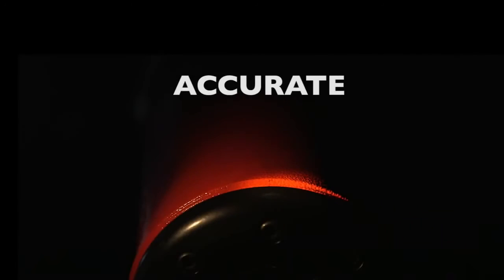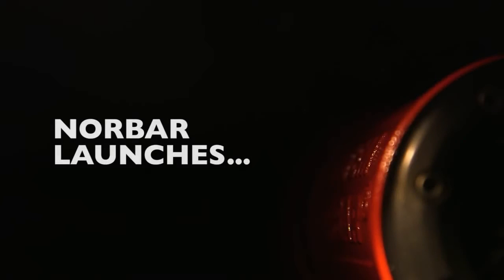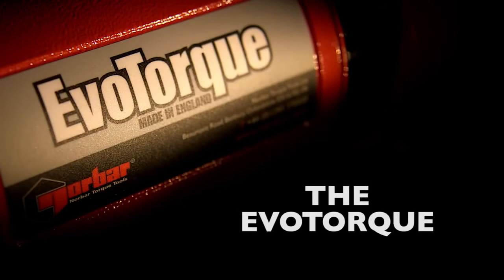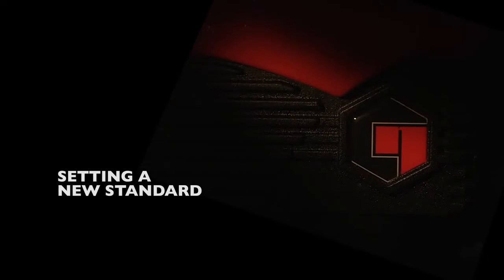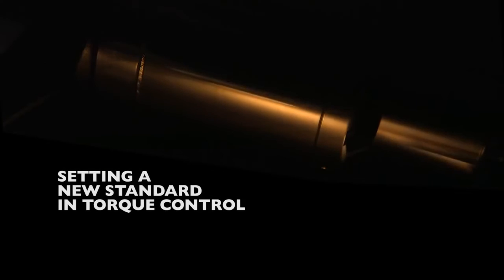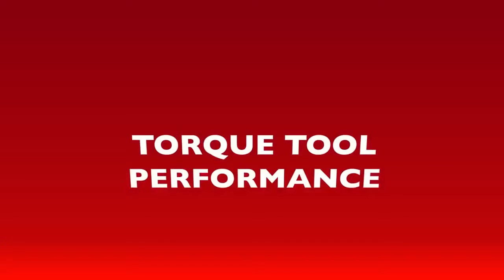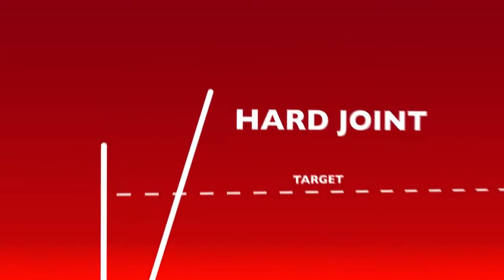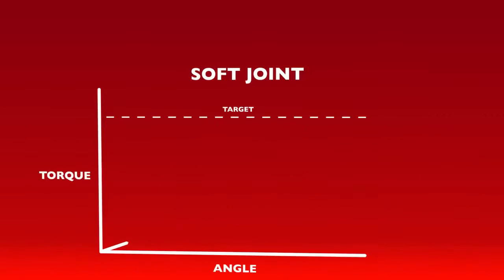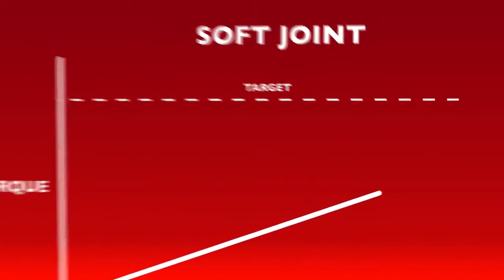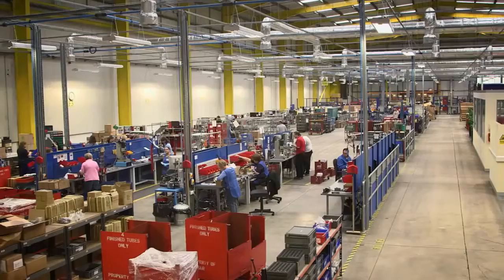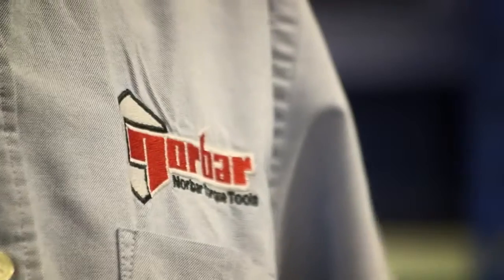Electronic, accurate. Norbar launches the Evo Torque, setting a new standard in torque control. Up until now, with electric torque tools, results revealed overshooting on hard joints and undershooting on soft joints.